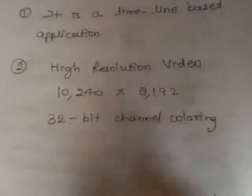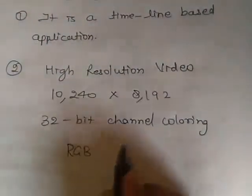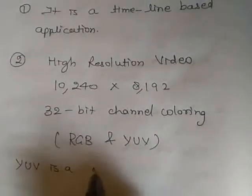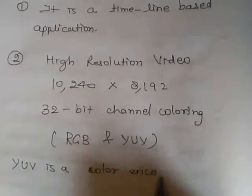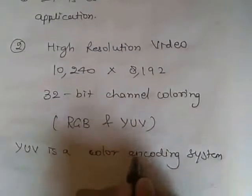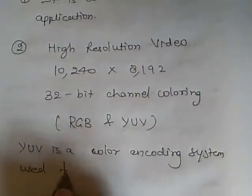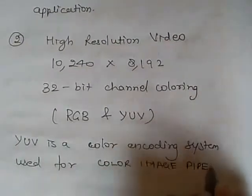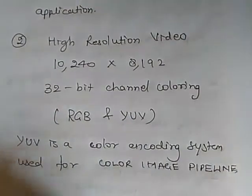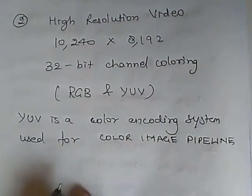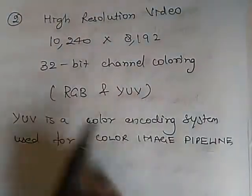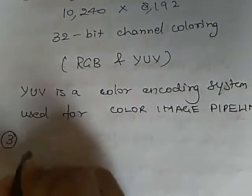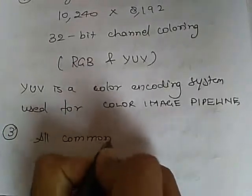Now actually we have two types of coloring systems: first we have RGB, and the second we have YUV. YUV is a color encoding system used for color image pipeline. So with the help of Adobe Premiere, all common videos can be produced as high-resolution video. A further characteristic of Adobe Premiere is that all common videos can be produced for broadcasting broadcast quality and high-definition output.